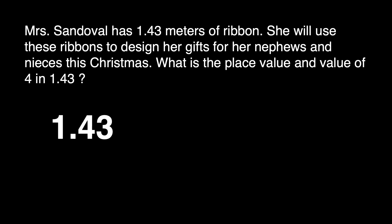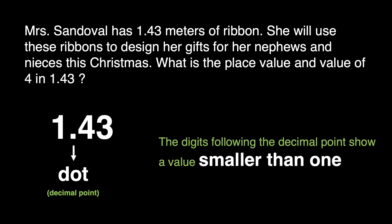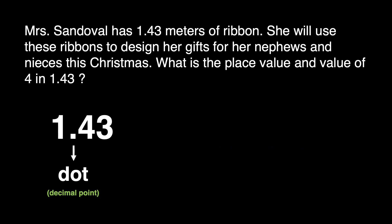What is a decimal number? A decimal number can be defined as a number whose whole number part and the fractional part is separated by a decimal point. The dot in the decimal number is called the decimal point. The digits following the decimal point show a value smaller than 1. The number located on the left side of our decimal point is our whole number part.